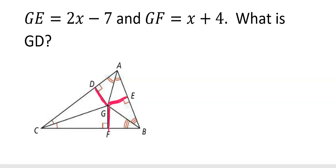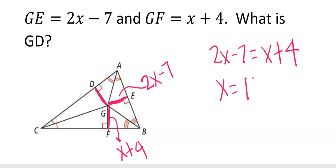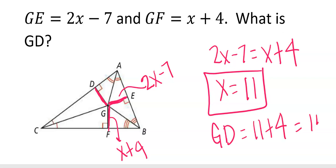So looking at this, GE, this one, is 2x minus 7. GF is this one, x plus 4. So if they're marked the same, shouldn't they just be equal? So 2x minus 7 equals x plus 4. So x equals 11. And then GD, that's the other one. So they're asking for this one. Well, wouldn't they all be the same? So it wouldn't matter which one you plugged it into because they're all the same. So x plus 4 would be 11 plus 4. GD must be 15.